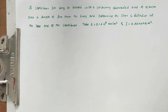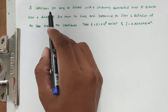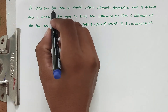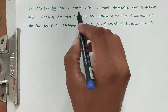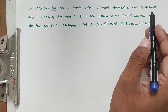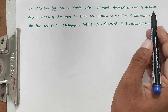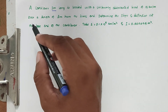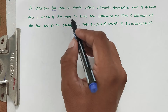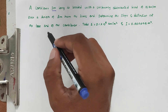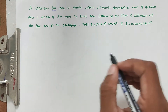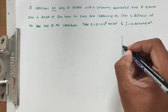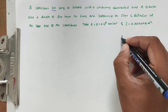Hello friends, welcome to Civilizing Exam. Today we're going to see a problem related to theory of structures. The problem is: a cantilever 3 meters long is loaded with a uniformly distributed load of 15 kilonewtons per meter over a length of 2 meters from the fixed end. First, we can draw the diagram.